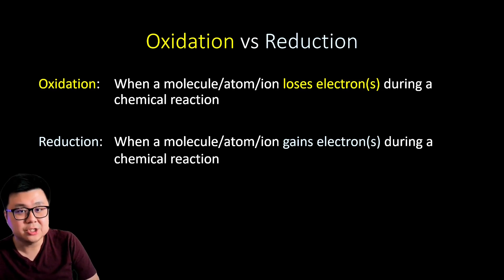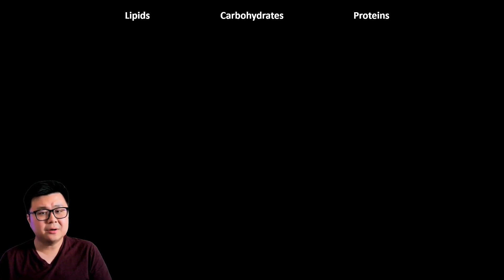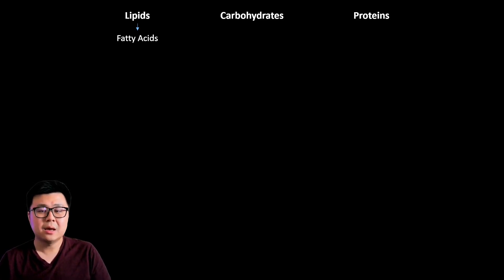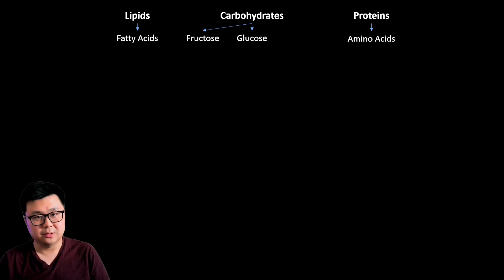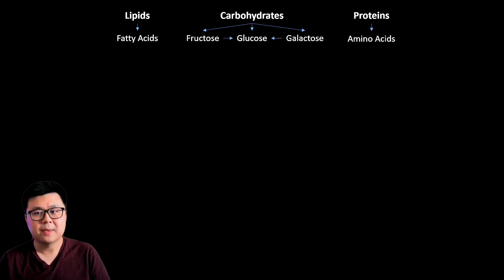Let's make a flow chart to show how we turn our inputs into outputs through oxidation. Starting with our macromolecules — carbohydrates, lipids, and proteins — they undergo digestion in our digestive tract. Lipids get broken down into fatty acids, proteins into amino acids, and carbohydrates into glucose, fructose, and galactose; fructose and galactose can be converted back into glucose. This first stage of breaking down macromolecules is done through hydrolysis — we call this Stage One.